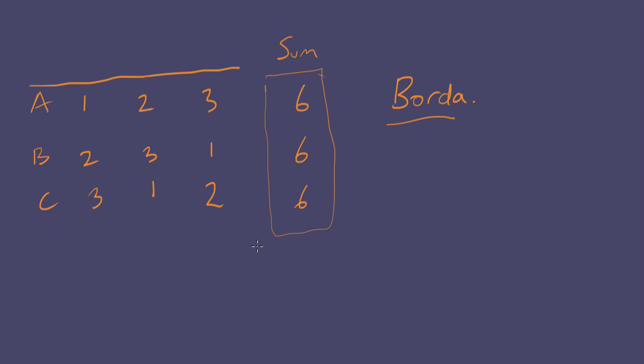That will do for Condorcet voting. In the next major video, we're going to go on to Arrow's actual strategy for how he develops his proof.